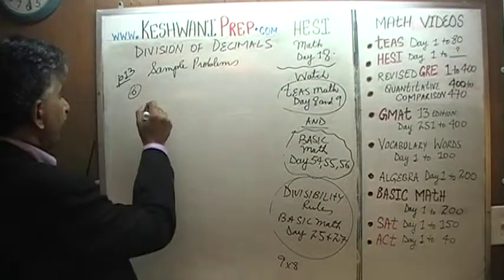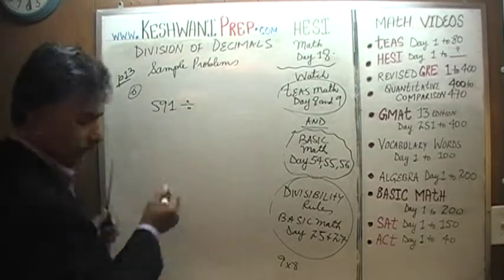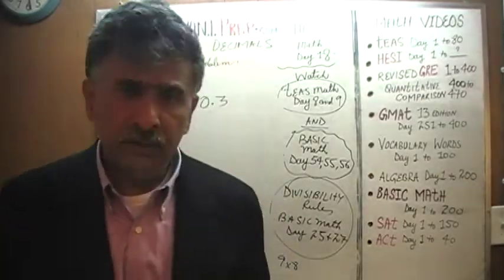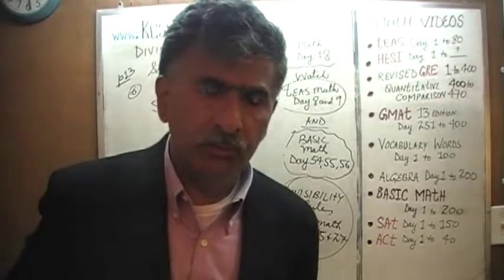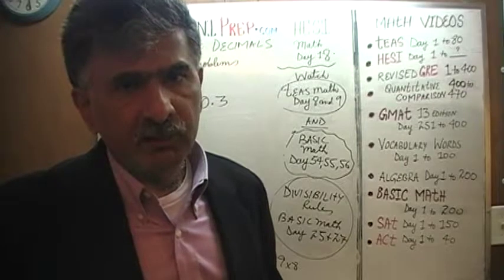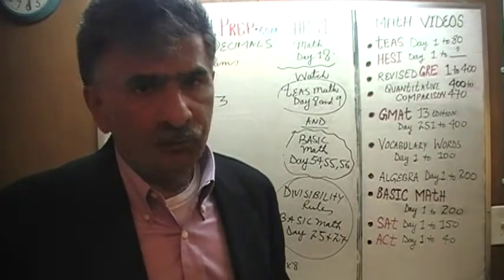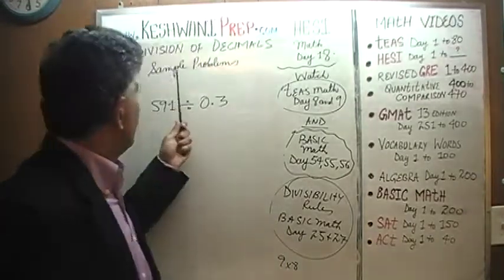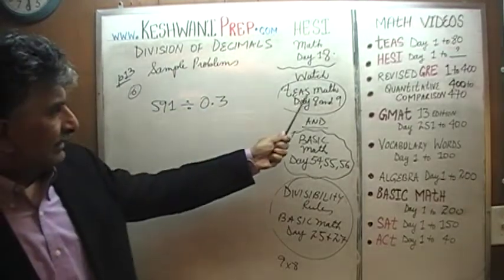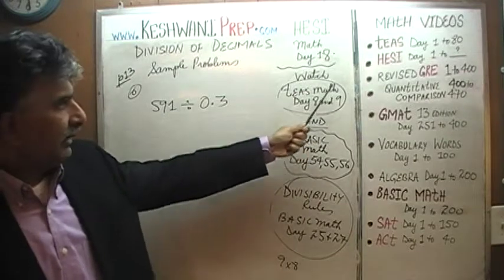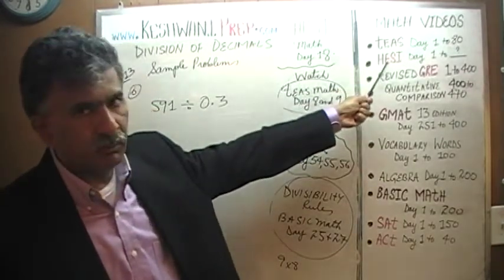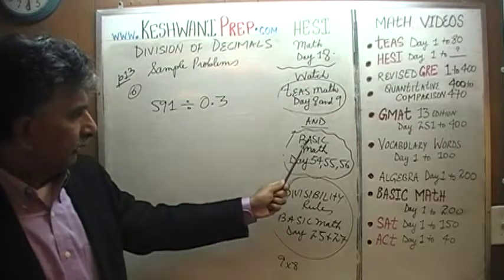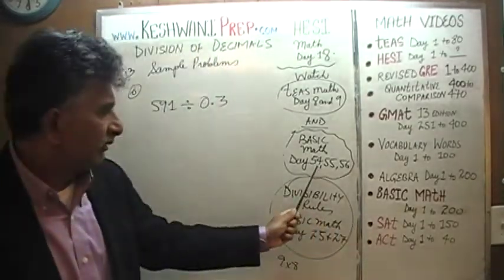Number six is telling us to divide 591 by 0.3. Before we get into it, I want to point out that there are only ten problems on that page. Ten problems, in my opinion, is not enough. If you feel you need more practice, there are more videos you can watch on division of decimals — T's Math, day eight and nine. The math on the HESI is very similar. Also, in the series of Basic Math, day number 54, 55, and 56.